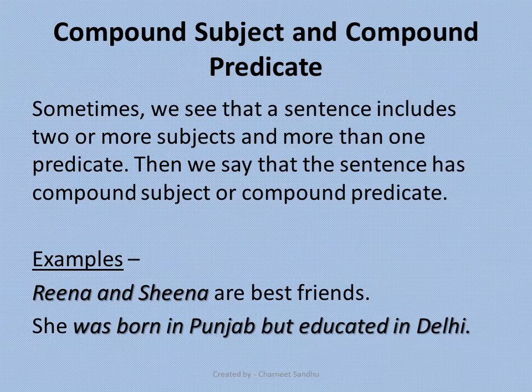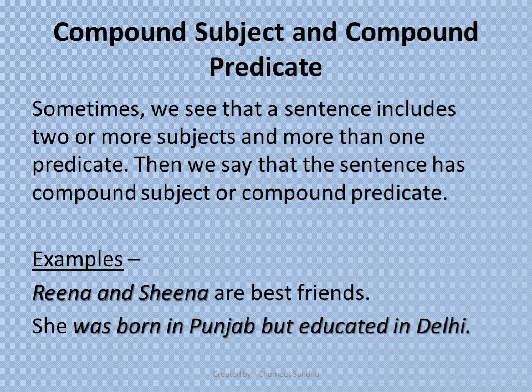Moving on to the next example: 'She was born in Punjab but educated in Delhi.' In this sentence, 'was born in Punjab but educated in Delhi' is the compound predicate. Why? Because it gives us two pieces of information about 'she' — one is that she was born in Punjab, and the other is that she was educated in Delhi. Because these are two different aspects joined together, they are called a compound predicate.